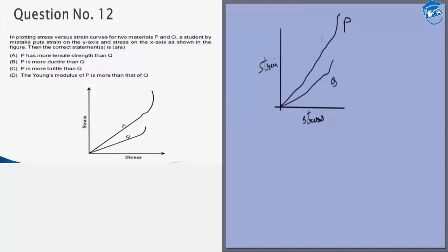Now for the same amount of stress, P suffers a greater strain than Q. Hence P is also more ductile than Q, and brittle is the opposite of ductile. So Q is more brittle than P.